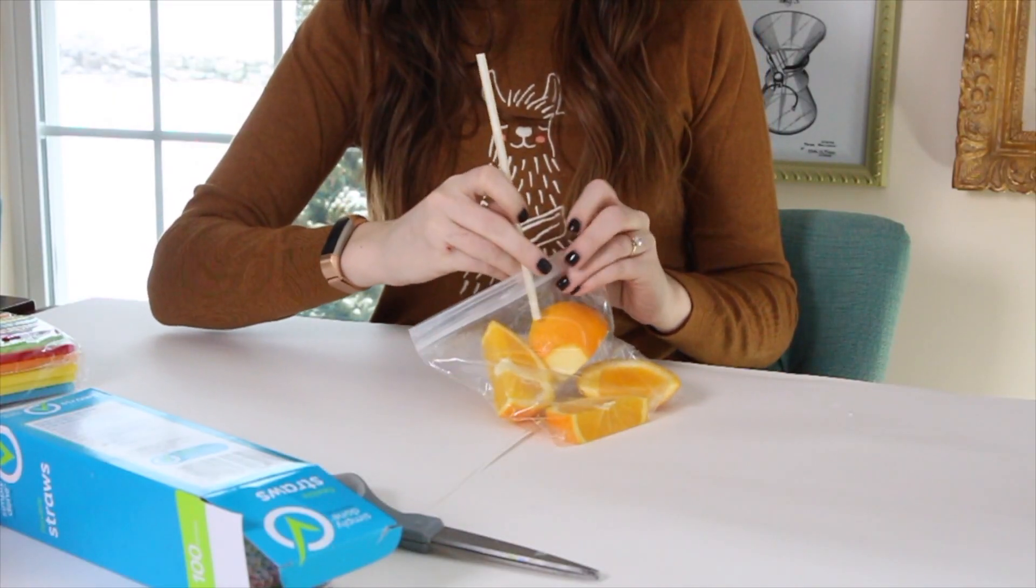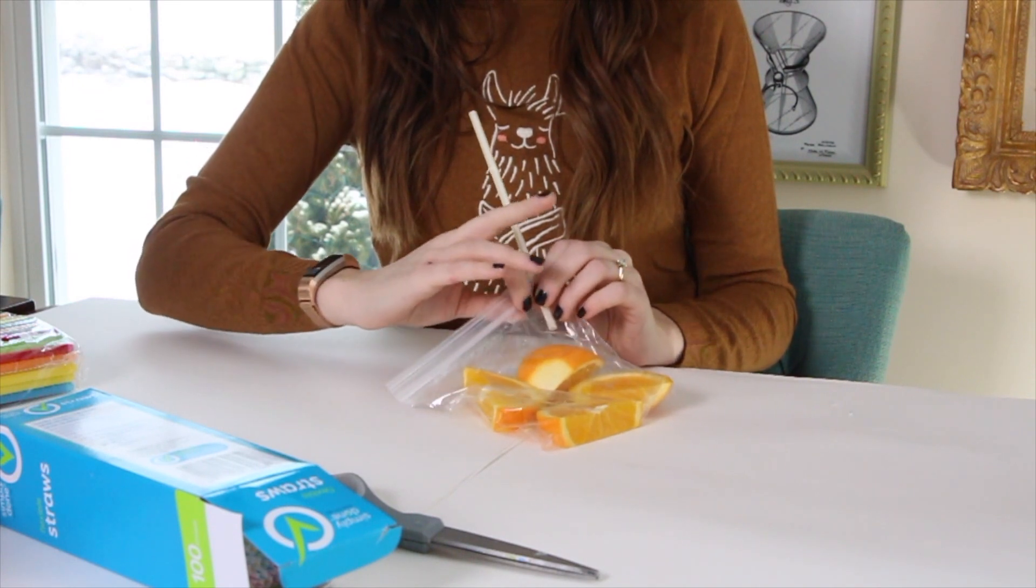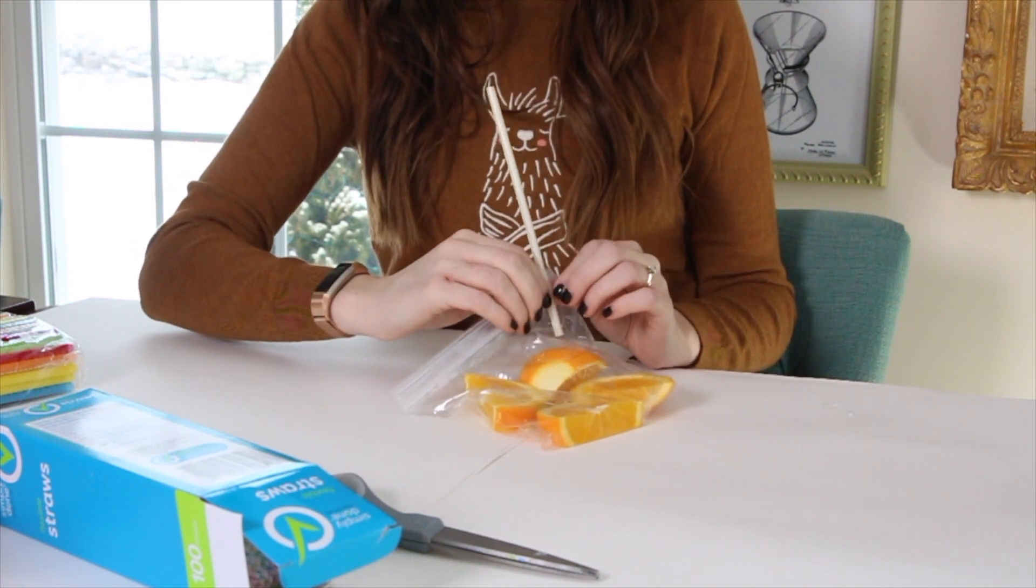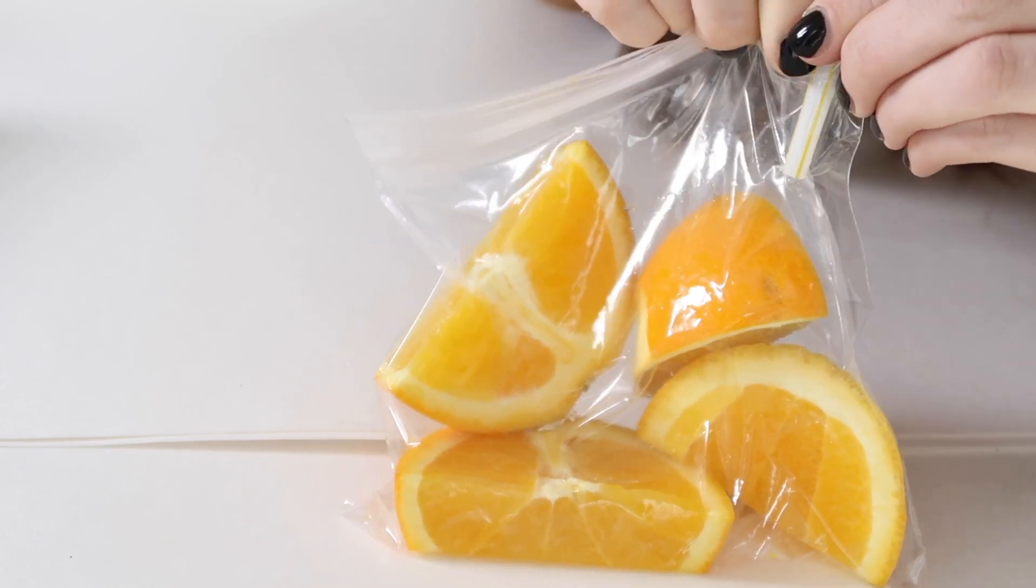Placing a straw inside, you're going to seal it up almost all the way so that just the straw is sticking out. And then you're going to suck all the air out of the bag. Pull out your straw and seal closed.